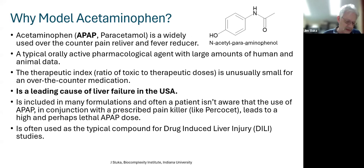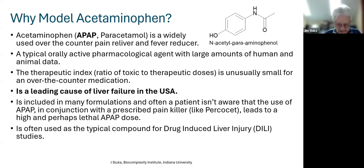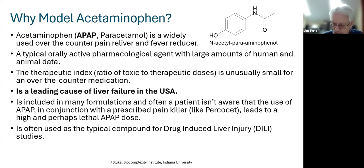The therapeutic index is the ratio of the toxic dose to the therapeutic dose. For acetaminophen it is somewhere between 100 and 1,000 — unusually low for an over-the-counter drug. This often causes problems because acetaminophen is co-dosed with other things; for instance, Percocet by weight is about 99% acetaminophen. People who have taken Percocet also take acetaminophen on the side, not realizing there's already acetaminophen in it, making it very easy to reach a liver-damaging dose.